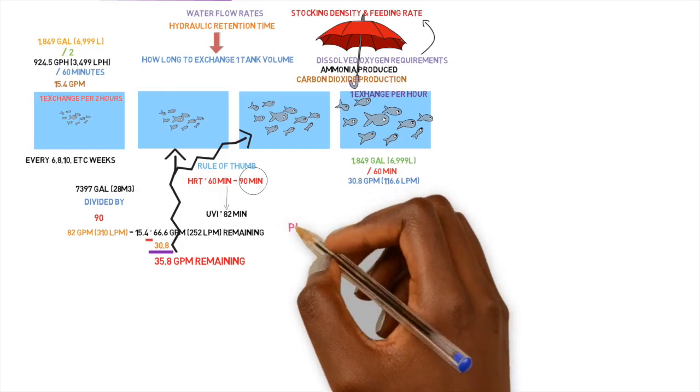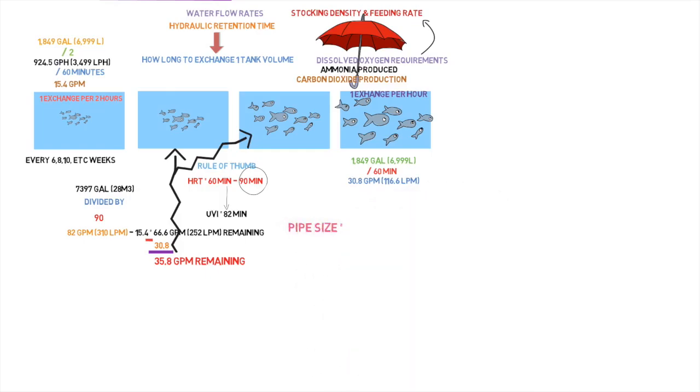Now, in regards to determining the pipe size, you really don't have much options. So you know how much water volume that you need to pass through. Let's say for this example here, you have 7,397 gallons total of fish tank. And I like to get a pump that can at least pump and replenish the whole thing at once per hour. Even though we're not going to use all of that flow, I still like to get a pump that can supply enough water volume to replenish all the tanks at least once per hour.